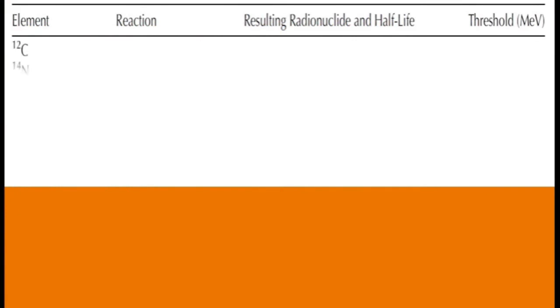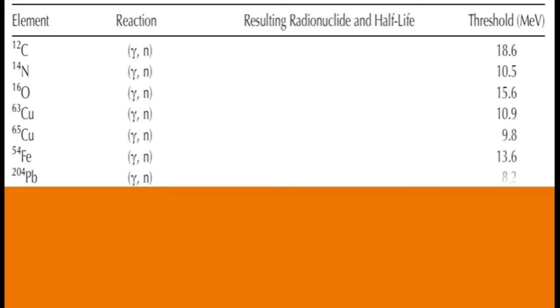These are few nuclides undergoing gamma neutron or X-ray neutron reaction. Threshold energy for these nuclides are around 10 MeV and more. The corresponding radioactive daughter nuclide, thus resulted after gamma-N reaction are given in column 3.